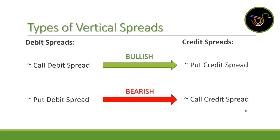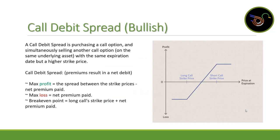There are actually four different types of vertical spreads, split into two categories: debit spreads and credit spreads. For bullish strategies we have a call debit spread and a put credit spread. For bearish strategies we have a put debit spread and a call credit spread. I'll go into explaining what each of those are.